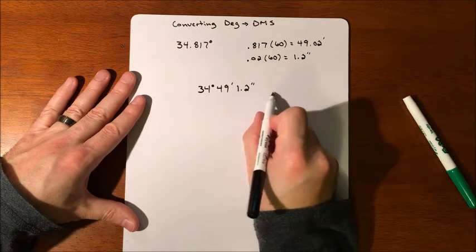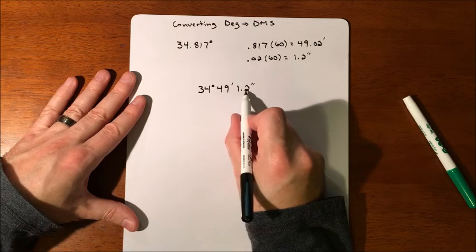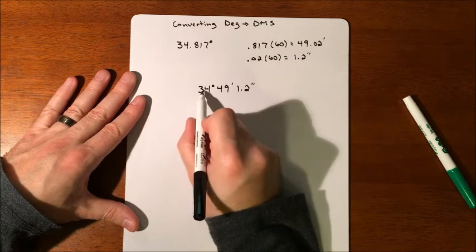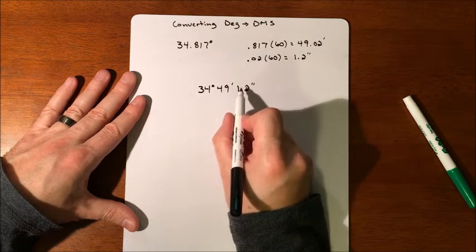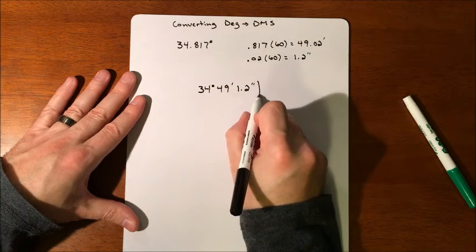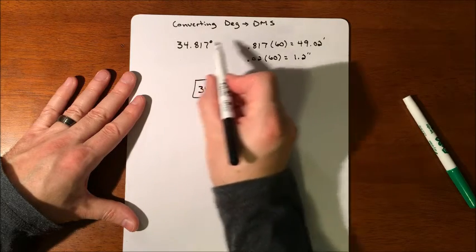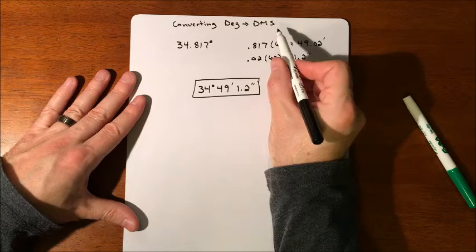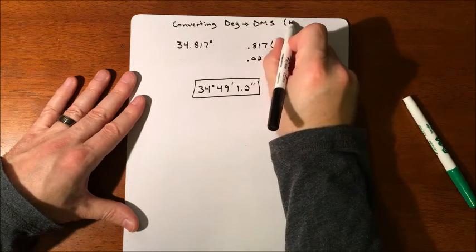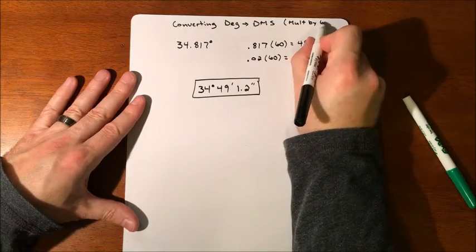Now, good thing is it doesn't go further than that. It cuts off at seconds. If seconds has decimals, then seconds has decimals. So 34 degrees, 49 minutes, and 1.2 seconds is equivalent to 34.817. So that's going from degrees to degrees, minutes, and seconds. It's a multiplying by 60 kind of a thing.